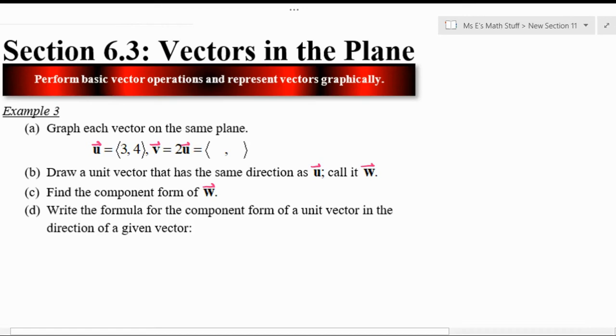Go ahead and draw both vectors on the same xy plane. See if you can figure out what the component form of this vector w would be that would be a unit vector. See if you can guess what a unit vector is. I'll give you a hint. What's a unit circle? It's a circle of radius one.